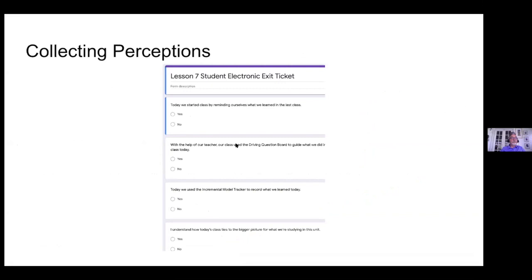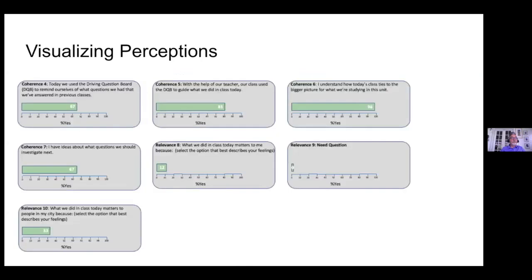To collect those perceptions, we've created student electronic exit tickets within the curriculum, given at least twice per unit. They're approximately 18 to 20 questions long, including some content questions, covering all three constructs. Unlike the Build Connections Tool — where the work is for students to gain stronger connections through completing the activity — the work here is for teachers and curriculum developers to gain better insight into how instruction is playing out and how the curriculum supports those connections.